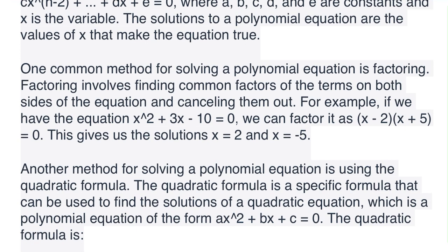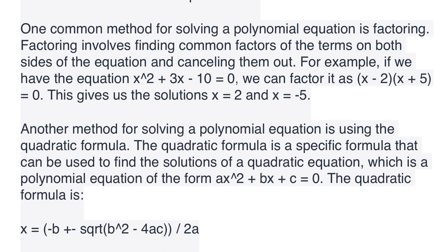A polynomial equation is an equation of the form ax^n + bx^(n-1) + cx^(n-2) + ... + dx + e = 0, where a, b, c, d, and e are constants and x is the variable. The solutions to a polynomial equation are the values of x that make the equation true.